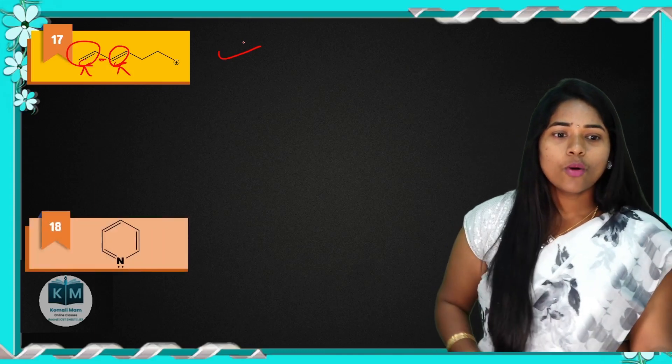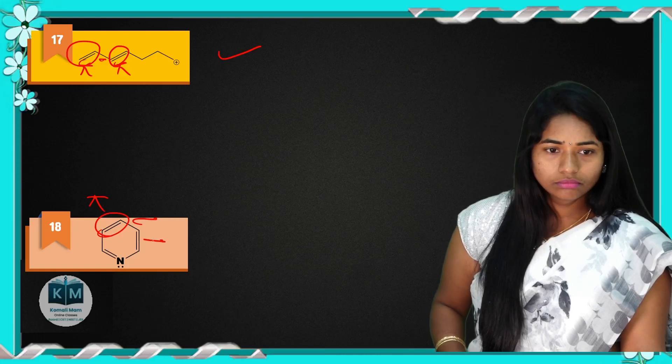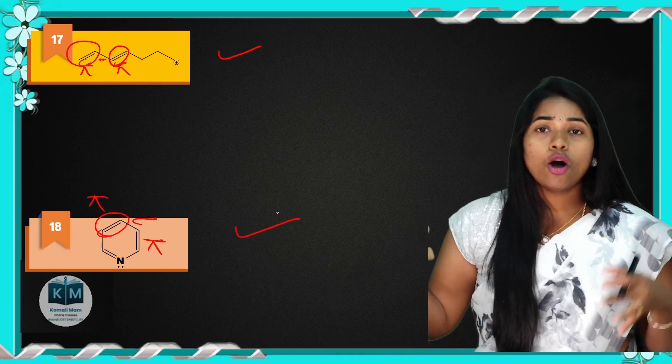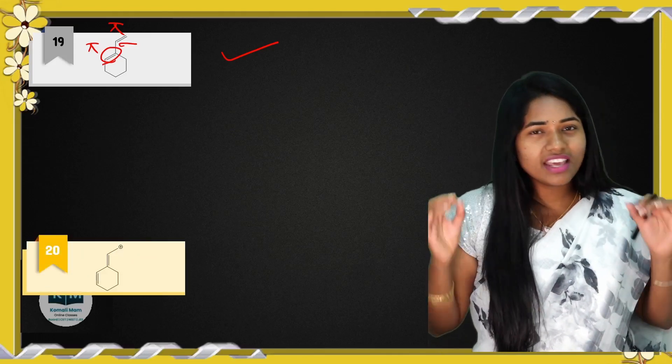When you get free time, go through the channel — there are over 400 tricks available. When you go through them one by one, you'll feel how easily you can score in chemistry. Make a note of every trick in one book and solve a number of questions from each trick. You will be very happy.